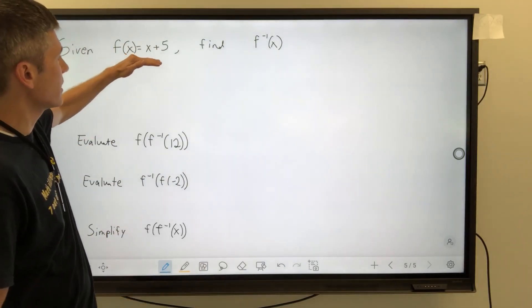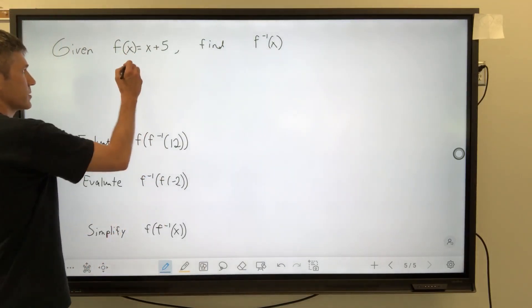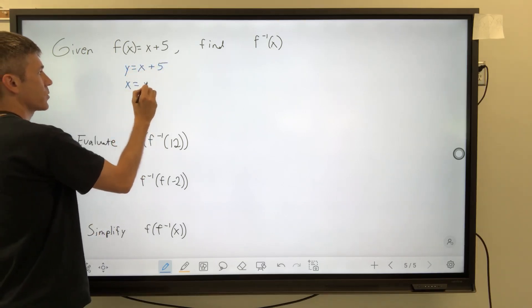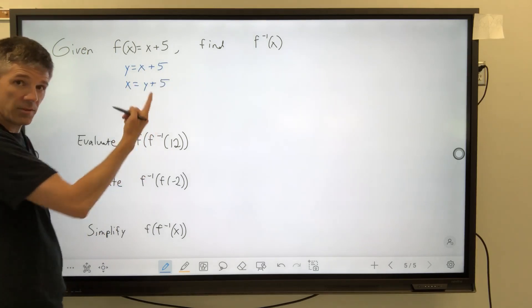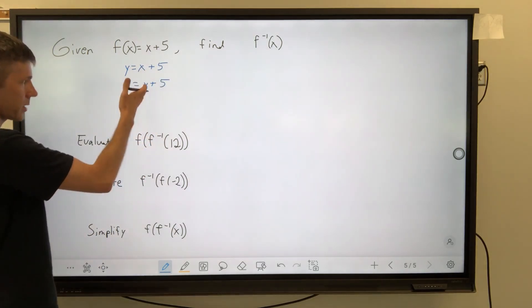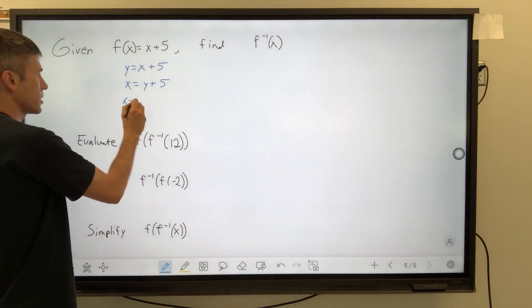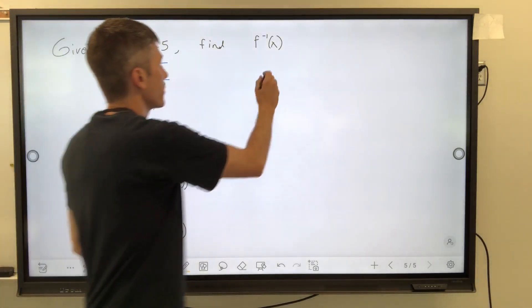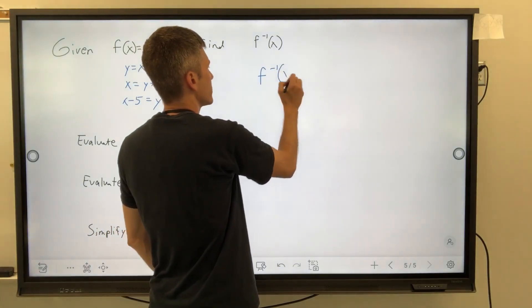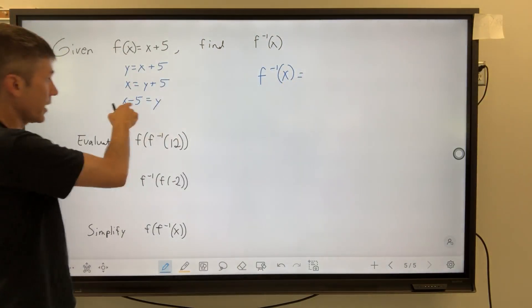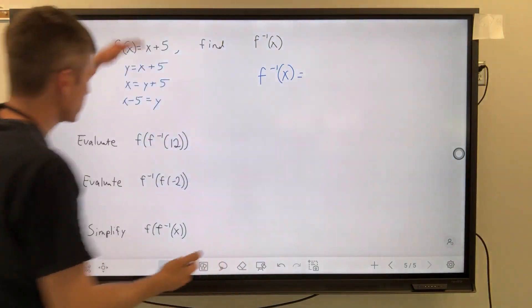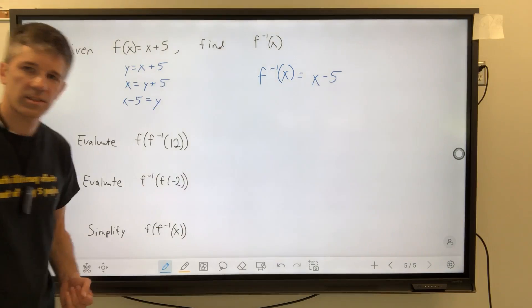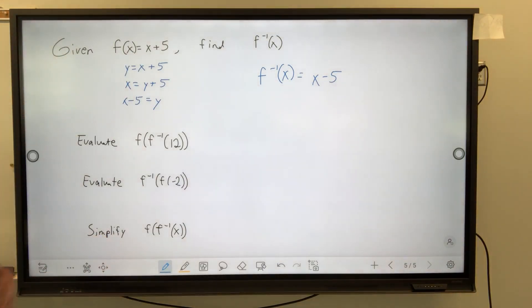If I wanted to write this as an inverse, should be written in process. Let's do that, and then we'll switch x and y, and then we'll solve it for y. So we're going to solve for y and be like, oh, how do I undo this plus 5? Well, I will subtract 5. So there we go. So final answer, I know that f inverse is x minus 5.